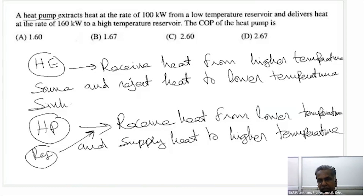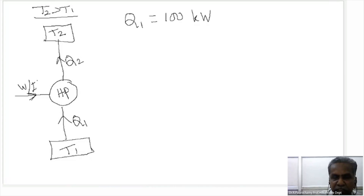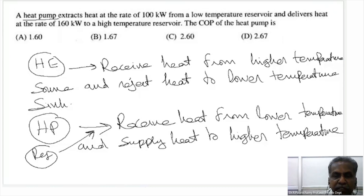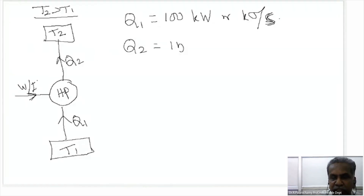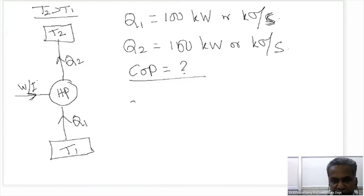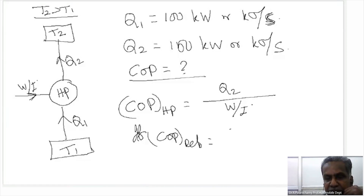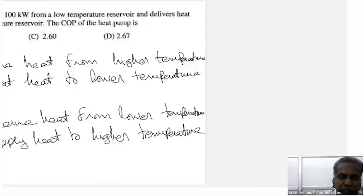A heat pump extracts heat at a rate of 100 kilowatt — that is Q1, extracted from the low temperature reservoir. It delivers heat at the rate of 160 kilowatt to the higher temperature — so Q2 is 160 kilowatt. The COP of the heat pump is Q2 divided by work input — that is, heat supplied to the hotter place divided by work input.